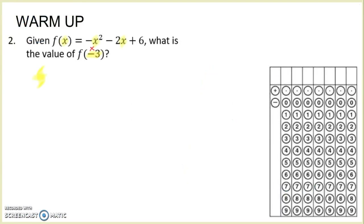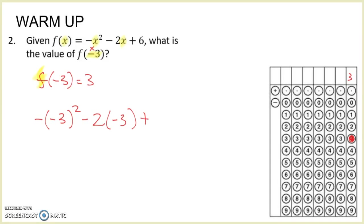When x is negative 3, the value is positive 3, and we would grid that in. The other way is to take the function itself — negative, then x squared becomes negative 3, minus 2 times negative 3, plus 6 — and evaluate that in your calculator. You should get positive 3 as long as you put negative 3 in parentheses. So you should get positive 3 as well.